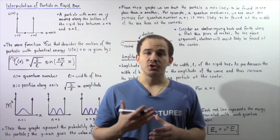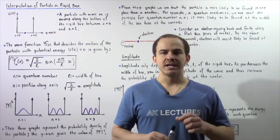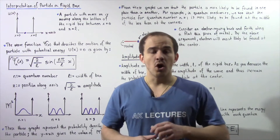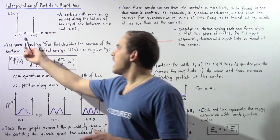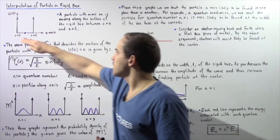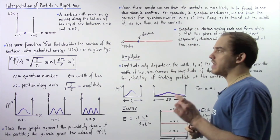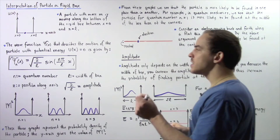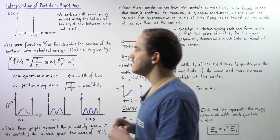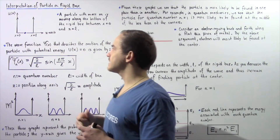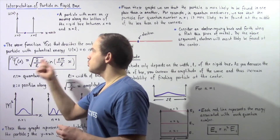In this lecture, we're going to analyze and interpret the results we obtained from our discussion of a particle moving in a rigid box, also known as an infinite potential well. We have a free particle with mass m moving inside a rigid box with left and right walls. The particle moves along the bottom of the box along the x-axis, where the y-axis represents potential energy and the x-axis represents position. The left corner is at x equals zero and the right corner is at x equals L, so the width of the box is L.